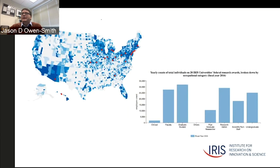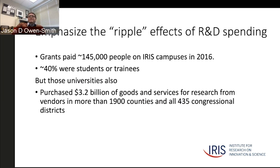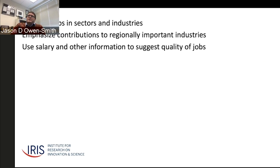This is important when we begin to talk to elected representatives in Washington, D.C., about why they might want to support this work, even when research funds may not flow to a university in their state. This map shows purchases of $3.2 billion of goods and services from vendors in 1,900 counties and critically—for purposes of government relations—at least 435 federal congressional districts.